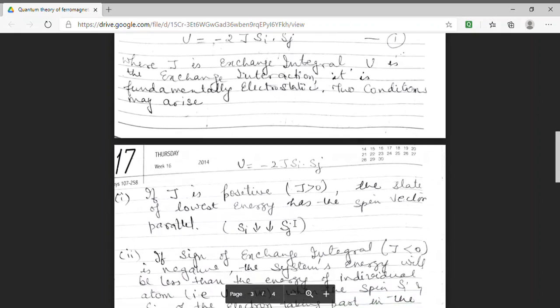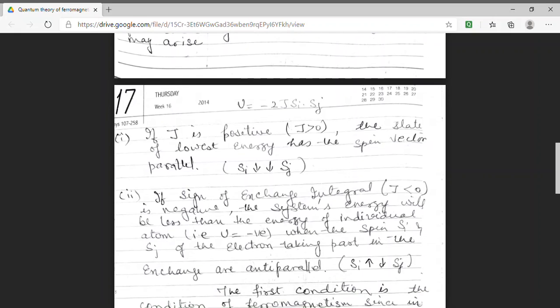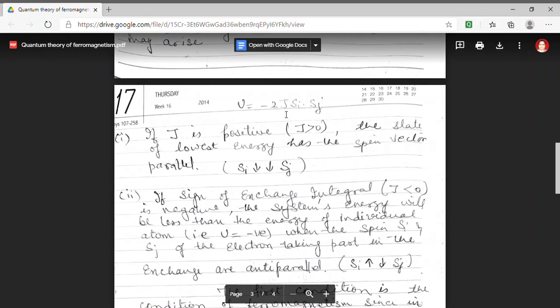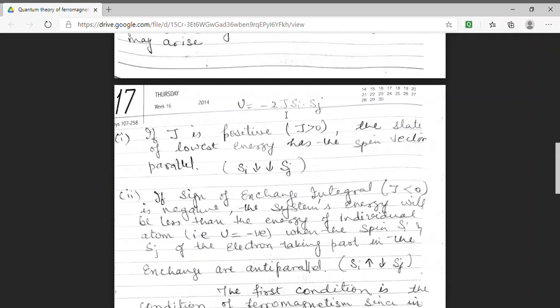Now, I am taking the second condition. I am taking the exchange integral to be negative. Now, in this condition, for the lowest energy state, that means for U to be negative, we have J negative and this condition will take place only when the spin of i and j, that means Si and Sj,